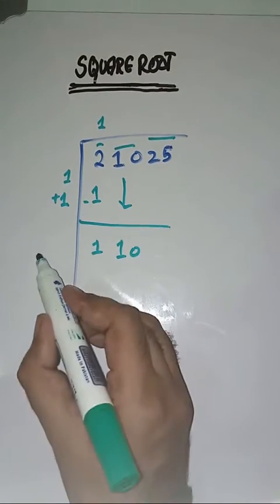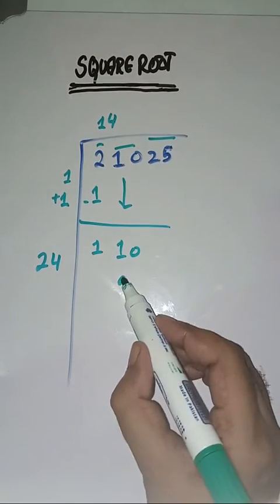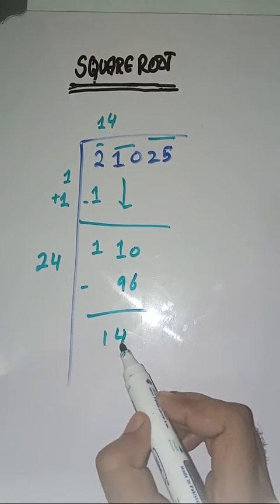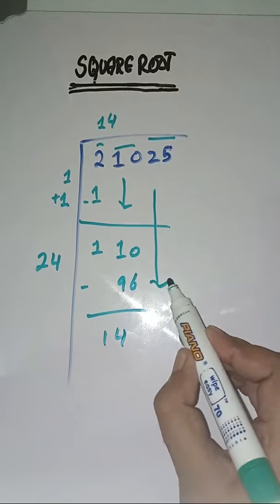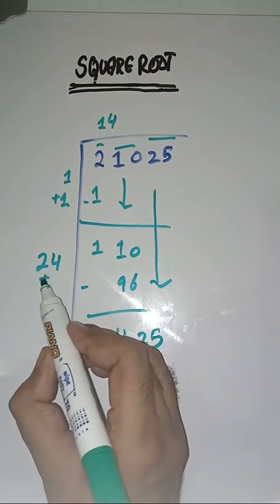So we will take number four. Twenty-four fours are ninety-six. Subtract, we have fourteen. Next pair is twenty-five, bring it down. So twenty-four plus four is equal to twenty-eight.